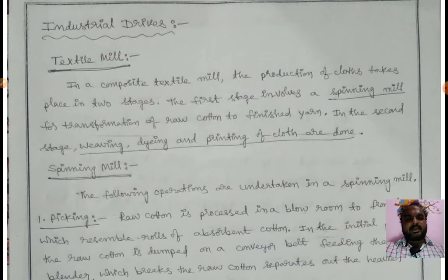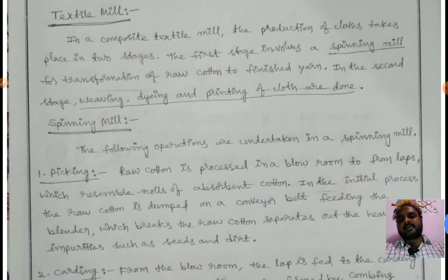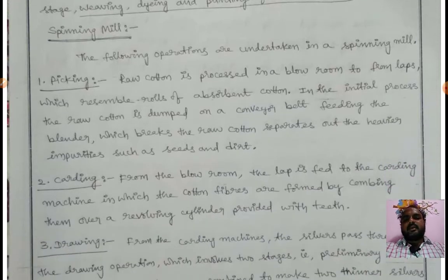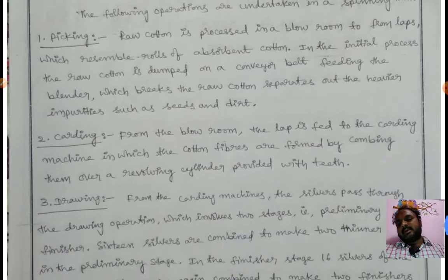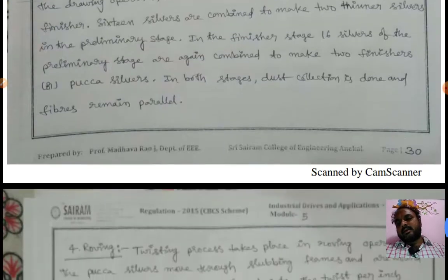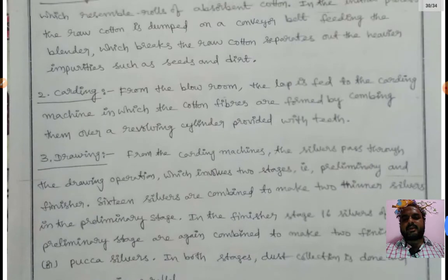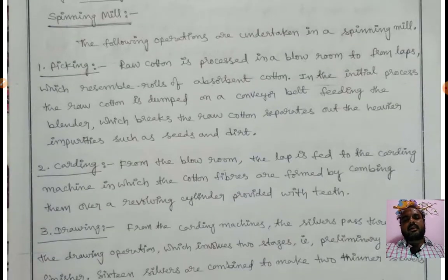In textile mills, the first stage is spinning and the second stage is the final product. Spinning consists of different operations: picking, carding, drawing, and finally spinning. Picking: raw cotton is processed in a blow room to form laps which resemble rolls of absorbent cotton.